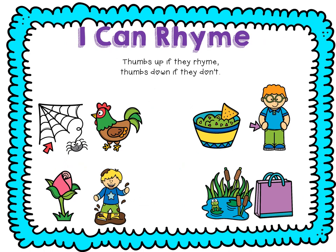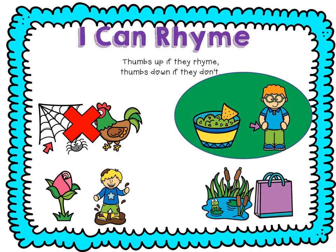Let's practice rhyming. Thumbs up if they rhyme, thumbs down if they don't. Web — hen. You say it: web — hen. What do you think? Thumbs down. One says -ebb and one says -en. Let's look at the next pictures. Dip — hip. You say it: dip — hip. Thumbs up — they rhyme. They both have -ip.